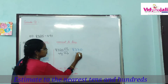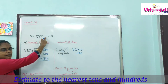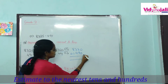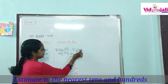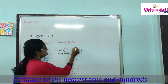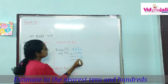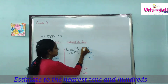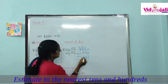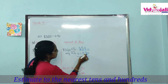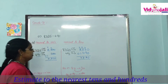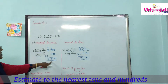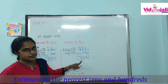So we have 8330 minus 490. Subtracting: 0, then 3 minus 9 is not possible so we borrow — 13 minus 9 gives 4, then again 2 minus 4 not possible so borrow — we get 8 and 7. Now observe both answers: this is the rough estimate and this is the closure estimate.